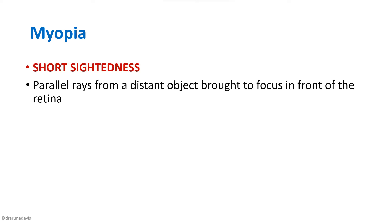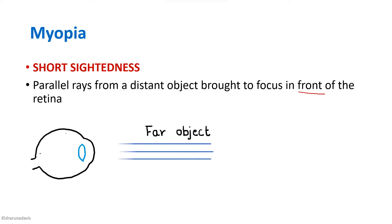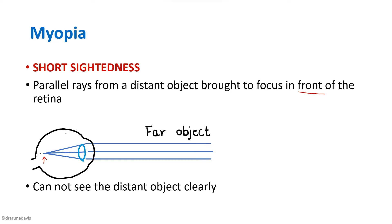The first type is myopia, which means short-sightedness. In myopia, parallel rays from a distant object are brought to focus in front of the retina. In a myopic eye, parallel rays coming from a far object are brought to focus in front of the retina. Such myopic people will not be able to see distant objects clearly — that is why they are called short-sighted, because they can only see objects at a shorter distance.